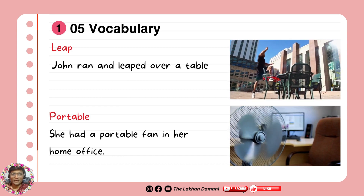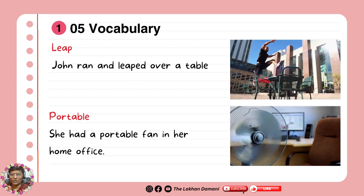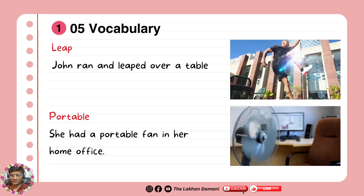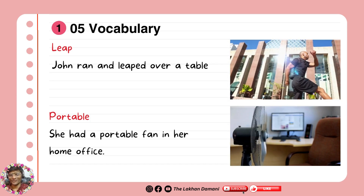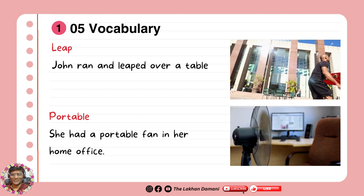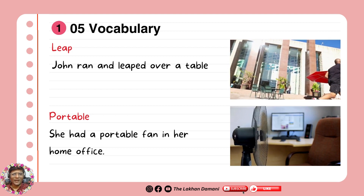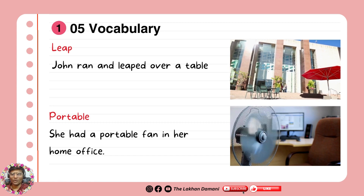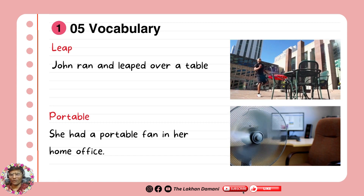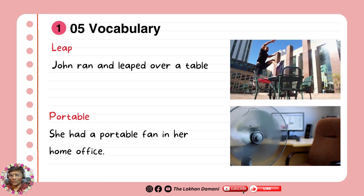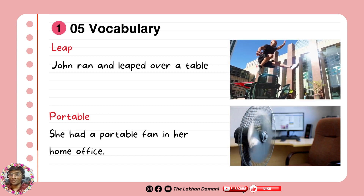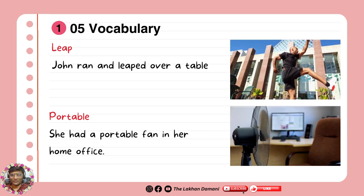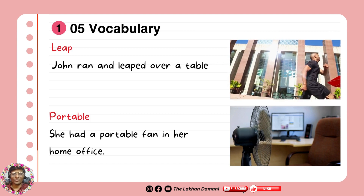Number three word: leap. John ran and leaped over a table — as you can see in the video to understand much better. And the fourth word: portable. She had a portable fan in her home office. I hope you understand what portable means. Try to write sentences for each word below for your practice.